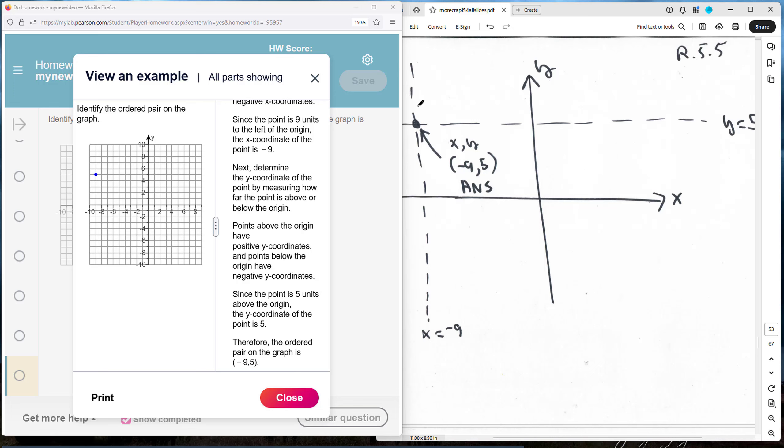So I drew a vertical line to represent all the x coordinates where x is equal to negative 9. Then I drew a horizontal line to represent all the y coordinates where y is equal to positive 5.